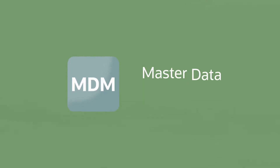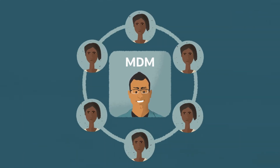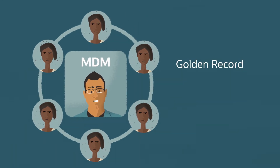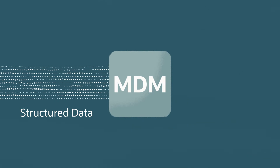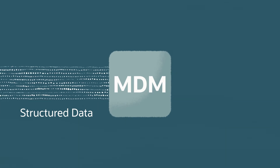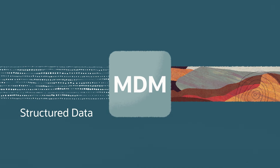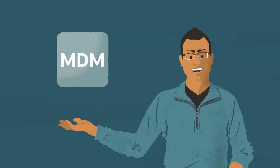Then came about MDM, which is master data management. What they were trying to do was come up with a 360-degree view of the customer, but primarily for the golden record and focused only on structured data. Now MDM companies are moving away from structured-only data and bringing in the ability to manage unstructured data as well, but it's still an IT tool.